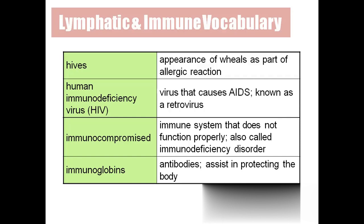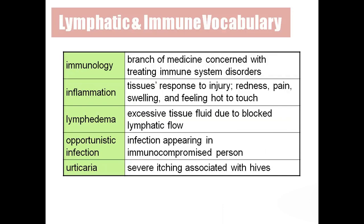Immunocompromised: persons who have weakened immunity — they can get COVID-19 or any other diseases very easily. Immunoglobulins are proteins, also called antibodies, that fight against antigens — bacteria, viruses, and similar pathogens. Immunology is a branch of medicine particularly treating immune system disorders. Inflammation is the body's response against injury — the body becomes red, painful, swollen, and hot to touch.